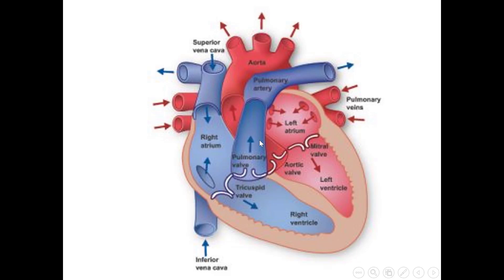From the right ventricle, the deoxygenated blood passes to the pulmonary artery or pulmonary trunk through the pulmonary valve. It is called the pulmonary valve because it allows blood from the right ventricle to the pulmonary trunk. The pulmonary trunk divides into two main arteries going to the lungs for oxygenation. The oxygenated blood then returns via four pulmonary veins — two on the left and two on the right — which open into the left atrium.